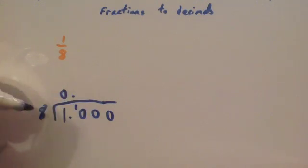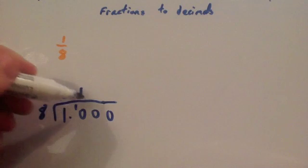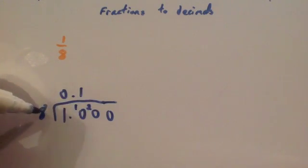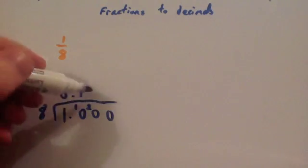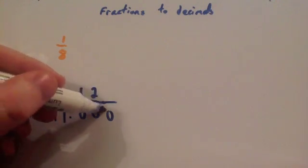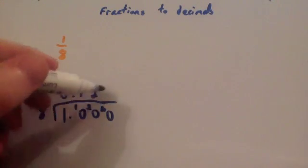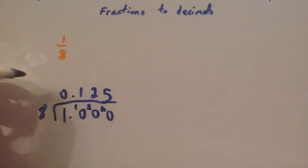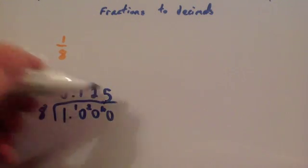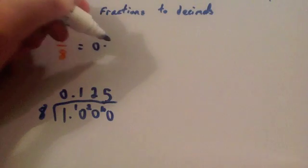Remainder 1. 8 into 10 goes once. Remainder 2. 8 into 20, that goes twice. 16. Remainder 4. And 8 into 40 goes 5 times. So, my answer is 0.125. So, 1 eighth is equal to 0.125.